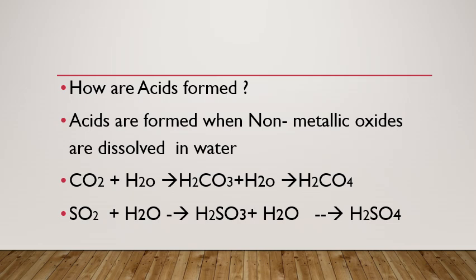Similarly, sulfur, which is a non-metal, when it reacts with oxygen it forms sulfur dioxide gas. When this sulfur dioxide gas is dissolved in water, it gives sulfurous acid. So we can say whenever non-metallic oxides are dissolved in water, they give the respective acids — here we get carbonic acid and sulfurous acid.